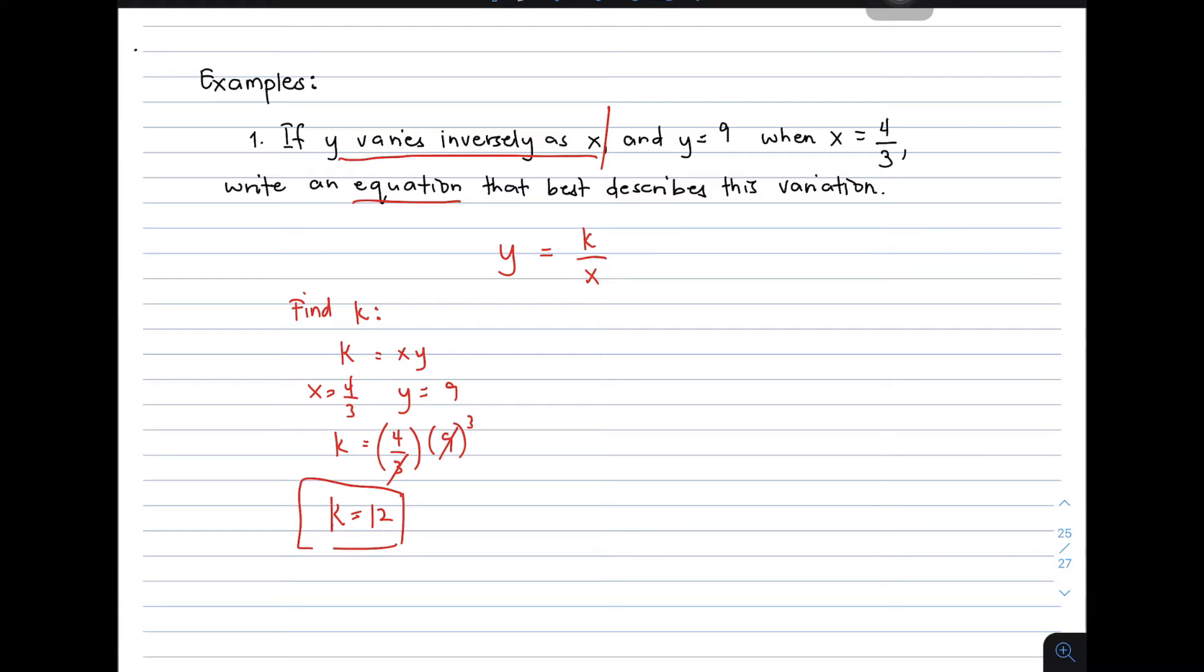Now, since you already have the value of k, your next step is go back with the general formula. You'll replace the k. So you have y is equal to 12 over x. This is the equation for this problem. The answer or the equation that best describes this variation is y is equal to 12 over x.